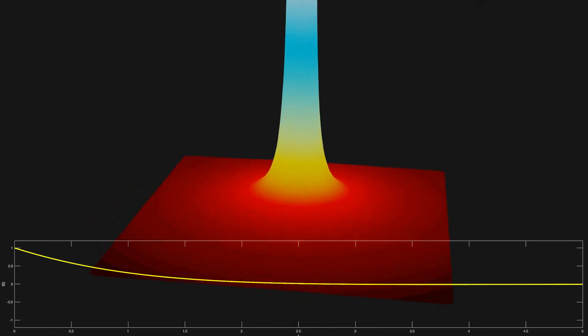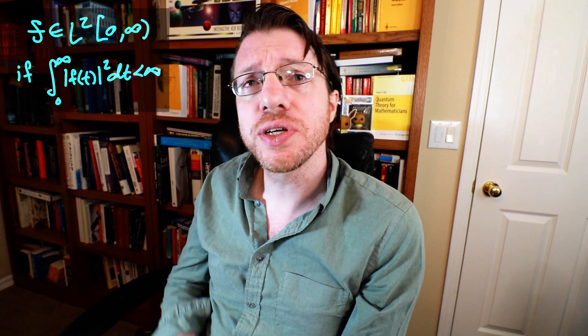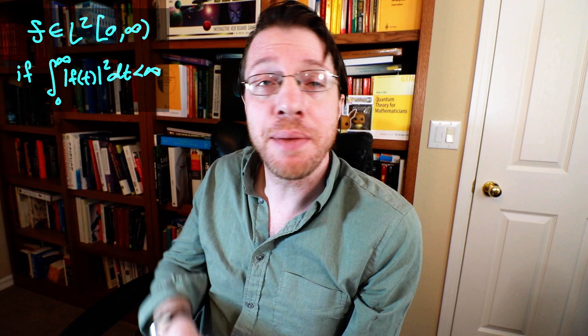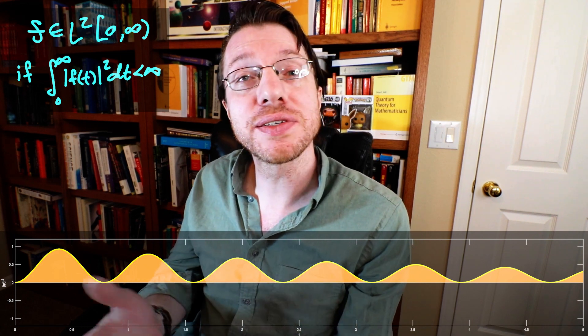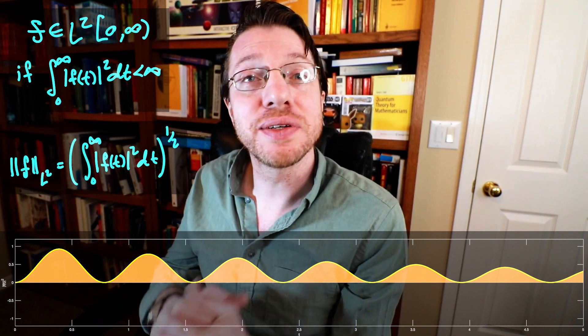It also happens to be norm preserving. So let's start by talking about what a norm is and discuss function spaces and norms. We have two function spaces we're dealing with. We have L2 from zero to infinity, which is the space of signals that map the positive real line to complex numbers, such that when you take the absolute value of the function, square it, and integrate from zero to infinity, that remains finite. The square root of that integral is the norm of a function in that space.